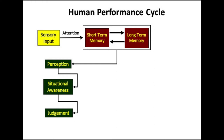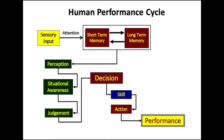Judgment encompasses its spatial context and consequential significance. It then helps him in making an appropriate choice, commonly known as decision-making. He then acts upon the choice by using motor skills, which eventually determines his performance.